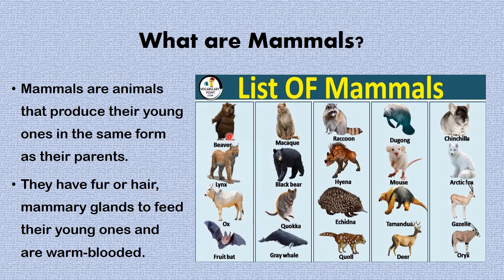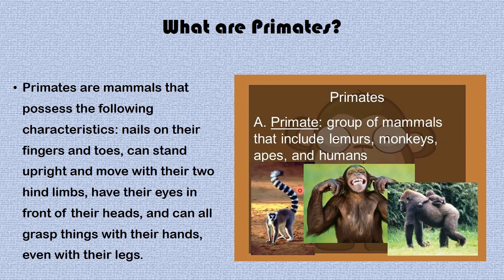From the picture that you see here, these are a list of mammals, of which man is one. We have the beaver, the raccoon, the arctic fox, the mouse, the crow, the deer, the fruit bat, and so on. These are all examples of mammals.